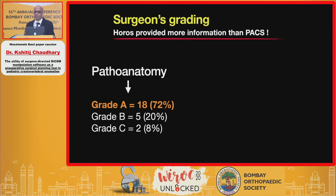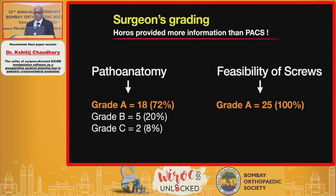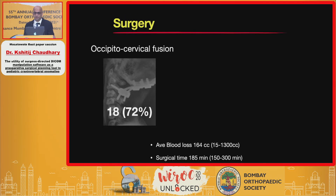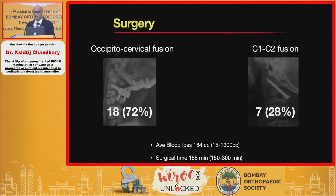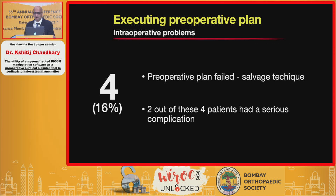As per the operating surgeon's grading, in 72 percent of patients new and substantial patho-anatomical information was obtained using MPR. With respect to screw feasibility, MPR was crucial in all patients. In about two-thirds of surgeries there was occipito-cervical fusion; seven patients had C1-C2 fusions. In four patients the pre-operative plan could not be executed and salvage techniques had to be used; two of these four patients developed serious complications.